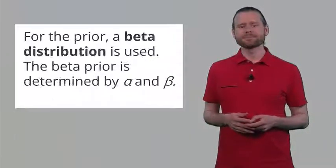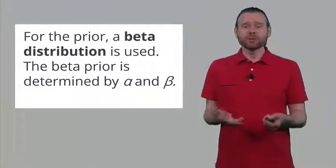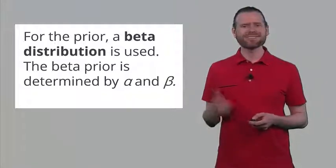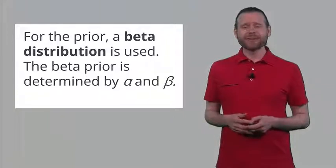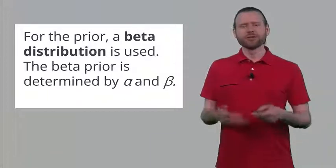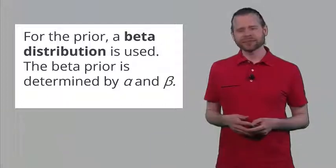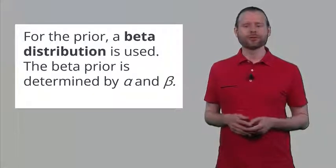We have to come up with a prior distribution. In the case of binomial probabilities, a beta distribution is used. The beta prior is determined by two parameters referred to as alpha and beta. This can get a little confusing because we already talked about alphas and betas as type 1 and type 2 errors. Regrettably, statisticians are not very creative with Greek letters, so there is some double use in the literature. A beta prior's alpha and beta are just two numbers that have nothing to do with error rates whatsoever.